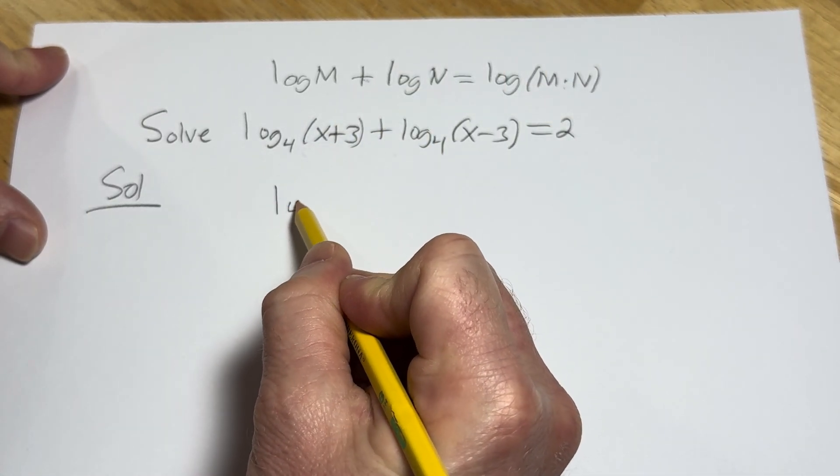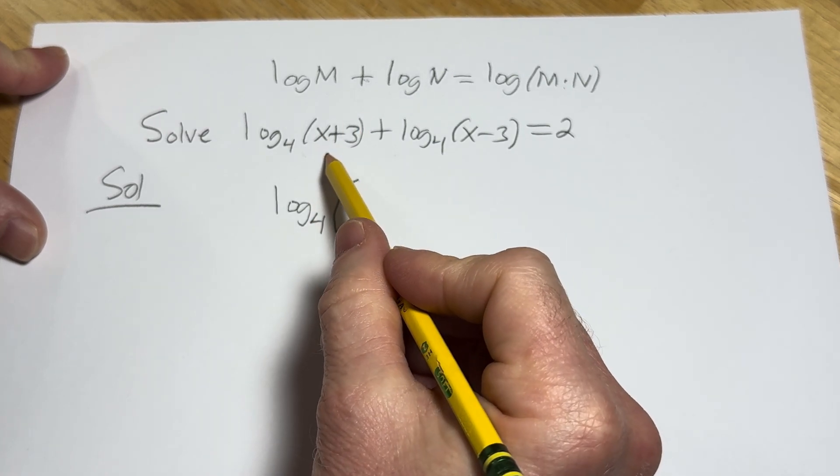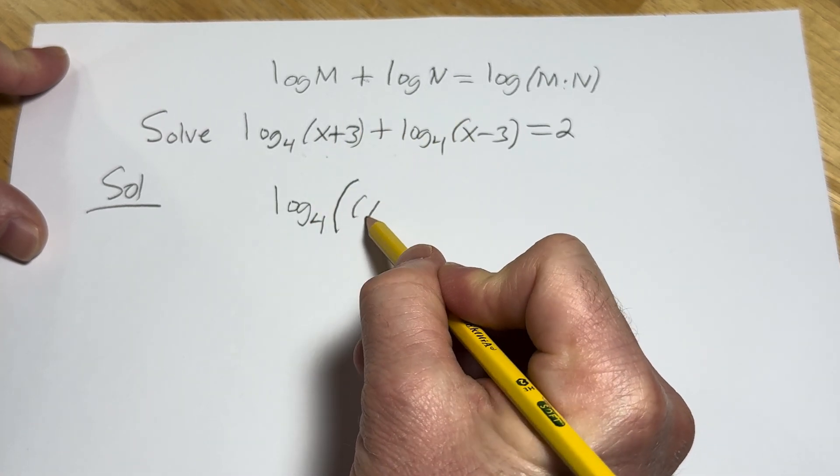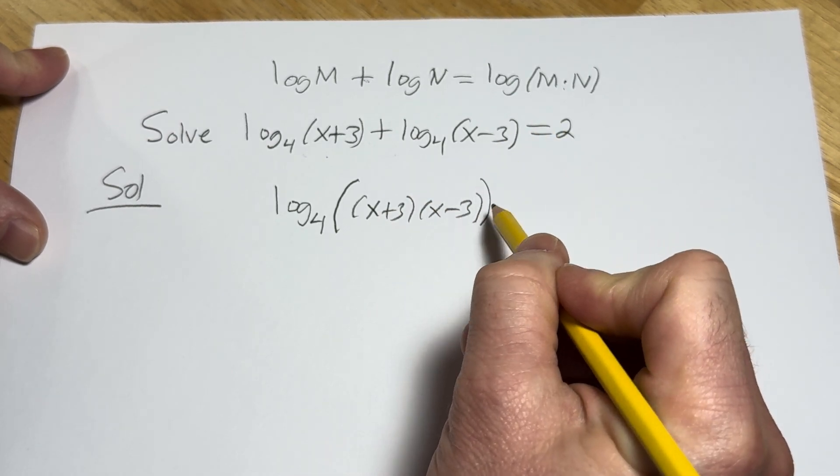So this will become log base 4 of, and this is kind of cool, x plus 3 times x minus 3. That's the difference of squares. And that's equal to 2.